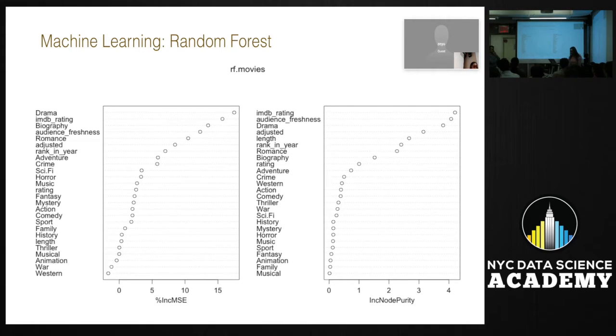And the random forest is using eight variables selected at random with 500 trees. And the training set returned a negative rate of 99% and a true positive rate of 100%. And the test set returned a true negative of 94% and a true positive of 100%. So this is a variable importance chart and it shows us which variables are important in order of their importance. So the IMDB rating is important, the audience freshness, the drama which we saw earlier, the length, the rank in time, the romance. And these are all things that we saw in the logistic regression as well as in the EDA.